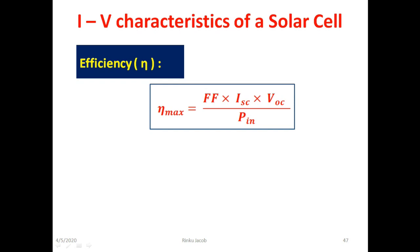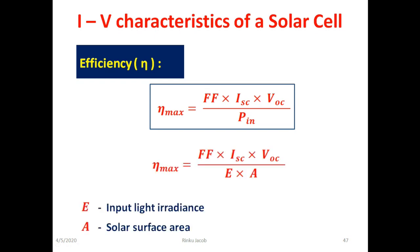Now we have to find the denominator term input power denoted by Pin. It is the amount of light energy falling in unit time. So it can be expressed as a product of input light irradiance denoted by capital E and the surface area of the solar cell on which this energy falls and it is denoted by capital A. Light irradiance is the flux of radiant energy per unit area that is normal to the direction of flow of the radiant energy through a medium.